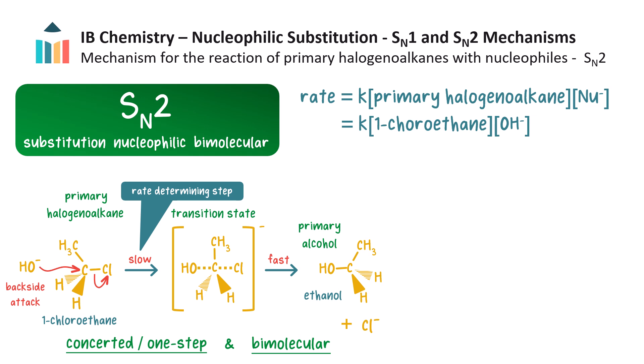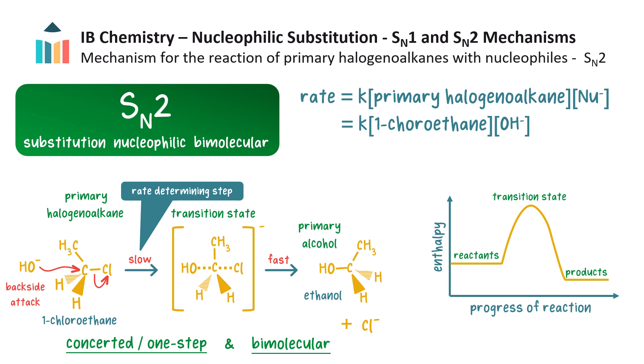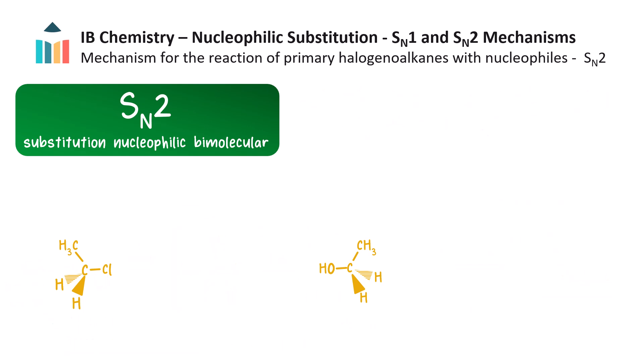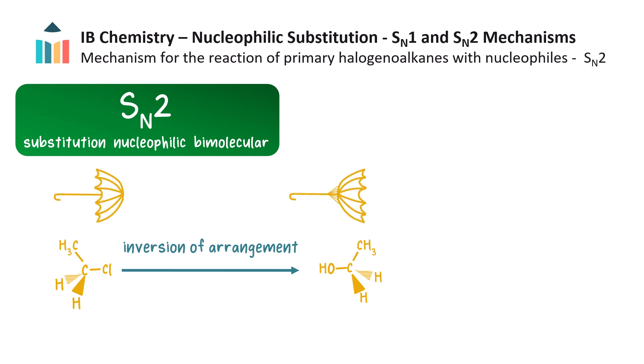Since there is only one step and therefore one transition state in an SN2 mechanism, its energy profile diagram has only one peak. Notice that in an SN2 mechanism, the arrangement of atoms becomes inverted, much like an umbrella on a very windy day. Since there is only one 3D configuration of the product from a given reactant, SN2 reactions are said to be stereospecific.